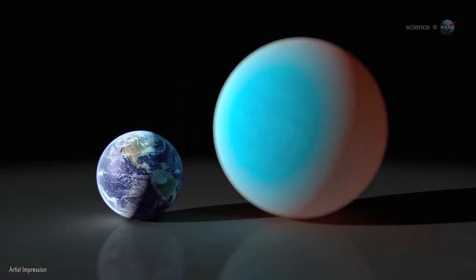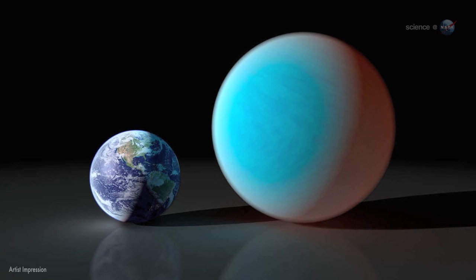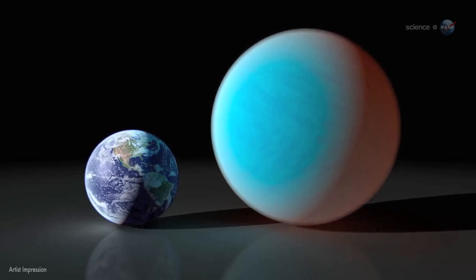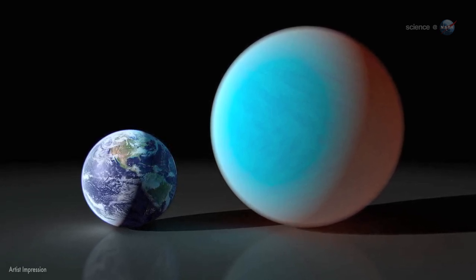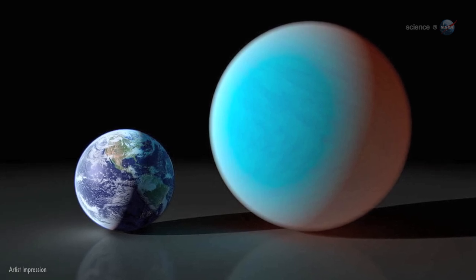According to the new observations, 55 Cancri e has a mass 7.8 times and a radius just over twice that of Earth. Those properties place 55 Cancri e in the super-Earth class of exoplanets, a few dozen of which have been found.